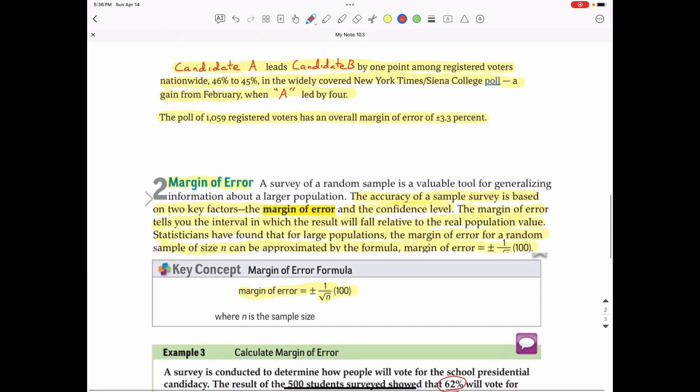If we go back to our real-life election that's going on up here with candidate A and B, we have a very close race. We have 46 percent going for candidate A and 45 percent going for candidate B, with a 3.3 percent margin of error. That would be found by taking 1 divided by the square root of the number of registered voters that was polled, which is 1,059, and that would be approximately 0.033, which would be 3.3 percent.